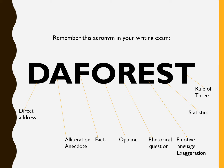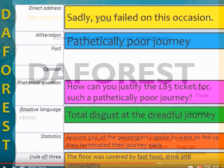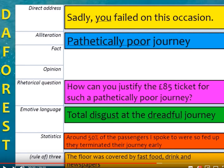DAFOREST is important for your reading exam as well as your writing exam. You need to show that you can use at least two of these techniques in each piece of writing. Here are quick examples: direct address — 'sadly you failed on this occasion'; alliteration — 'pathetically poor'; a rhetorical question; emotive language; statistics; and rule of three — 'fast food, drink, and newspapers.'